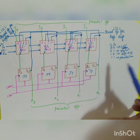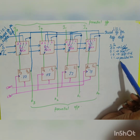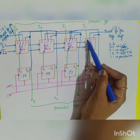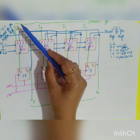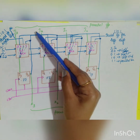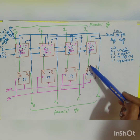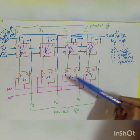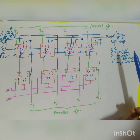The last mode is parallel load, when select lines are 11. The MUX selects input 3, which is the parallel load input — I3, I2, I1, I0. When the clock is applied, all the data is loaded in parallel, and the outputs Q3, Q2, Q1, Q0 will reflect the loaded values simultaneously. These are the four modes of operation of the universal shift register.